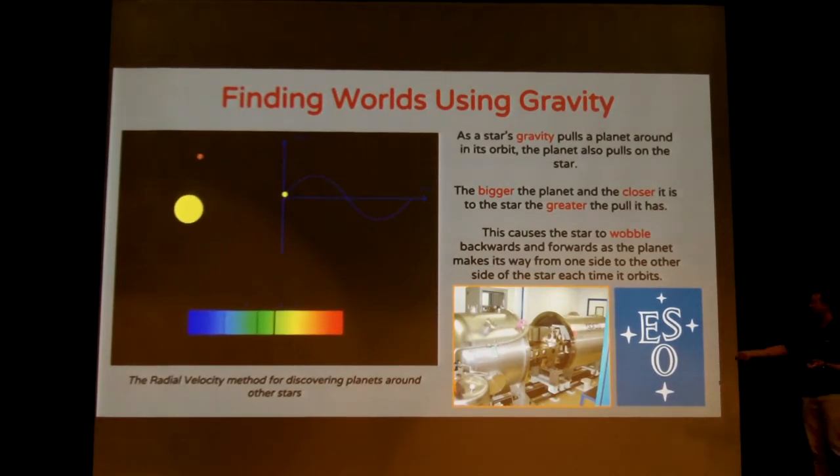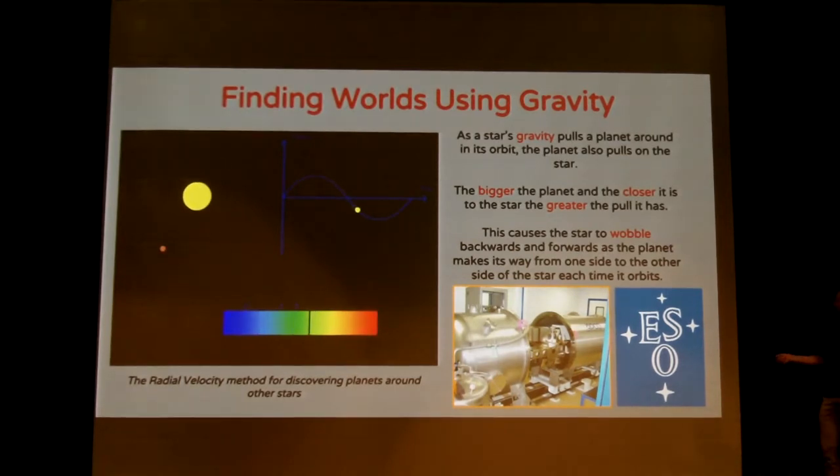So we can get quite a lot of information from this technique as well, especially if we use it with the transit method. Because this can tell us about how big the planet is, the mass of the planet. Because the larger the planet, the greater the effect that it's going to have in terms of this gravitational effect. And in terms of the instruments, this is one of the best ones. This is the HARPS instrument at the European Southern Observatory in Chile. It's very complicated. So I figured something there.